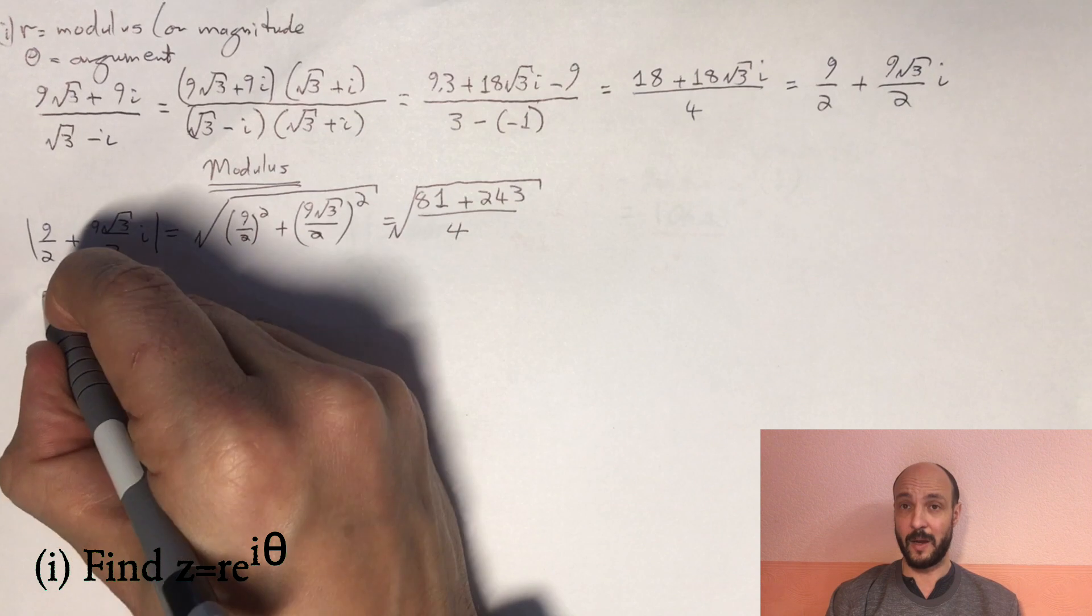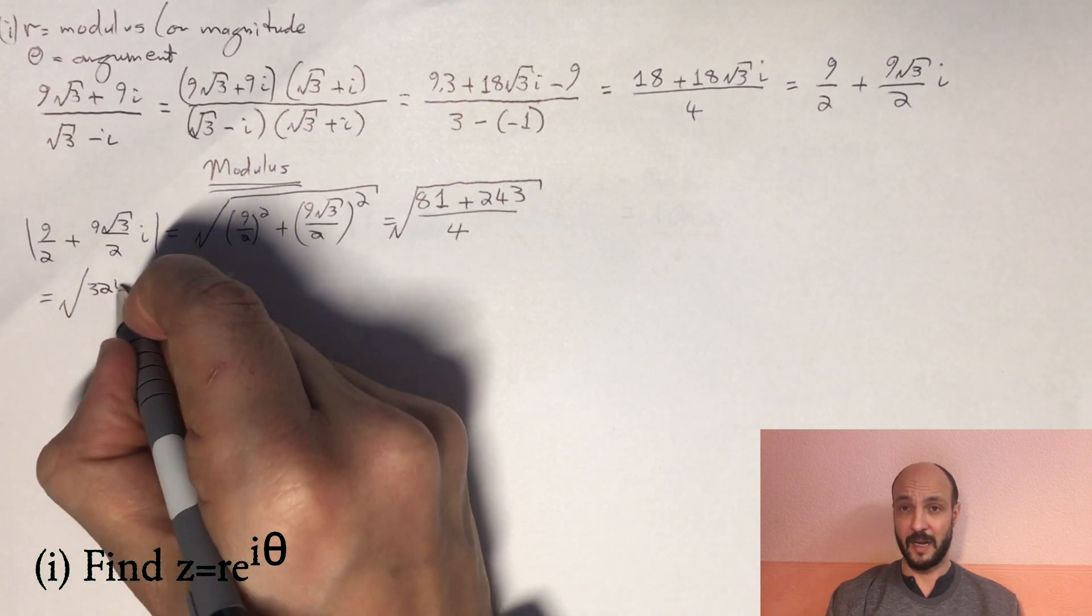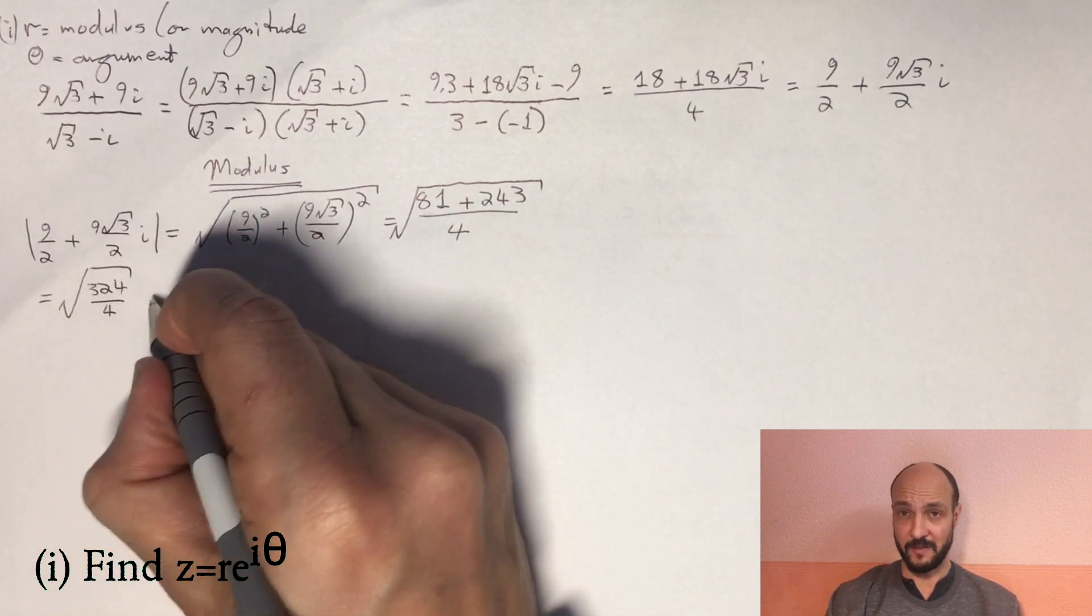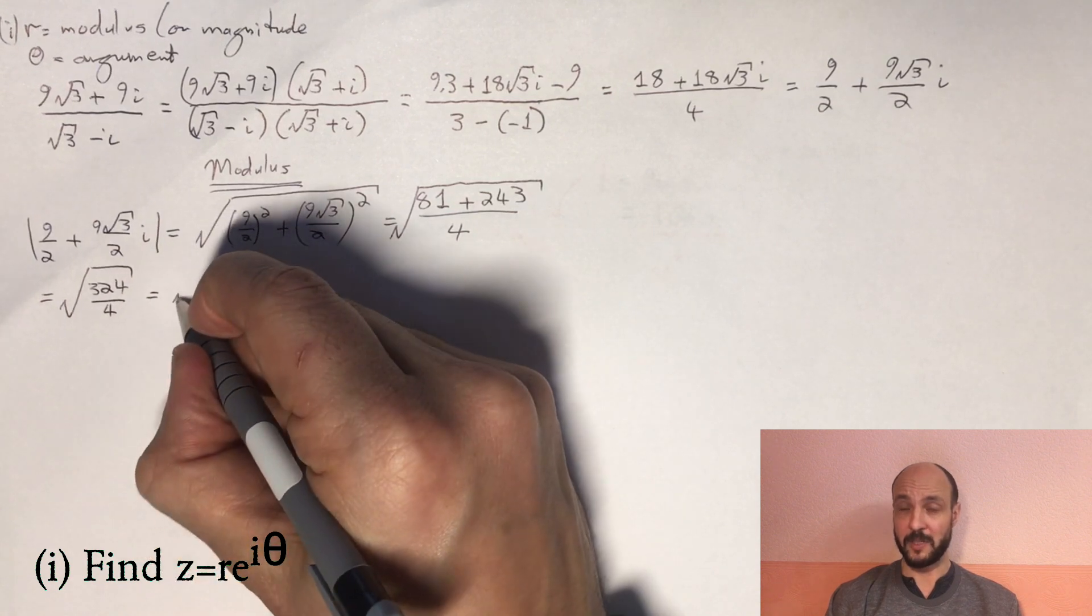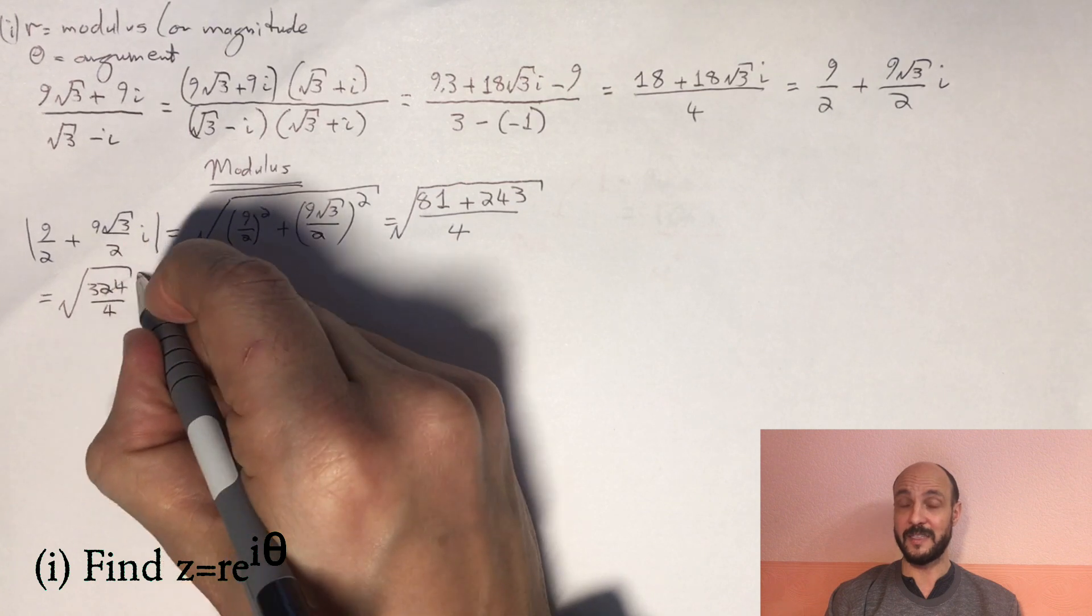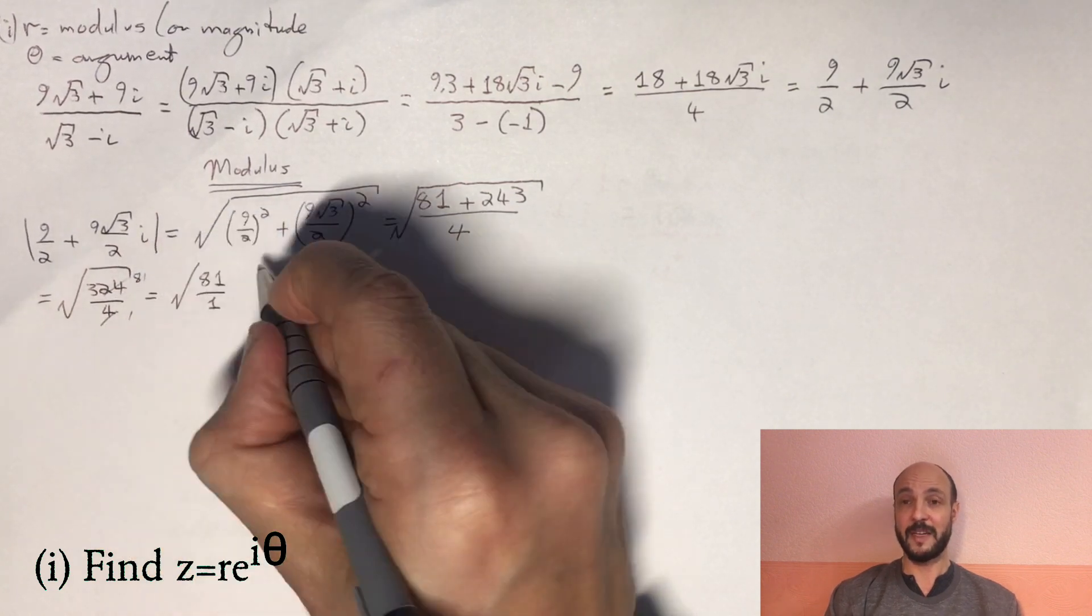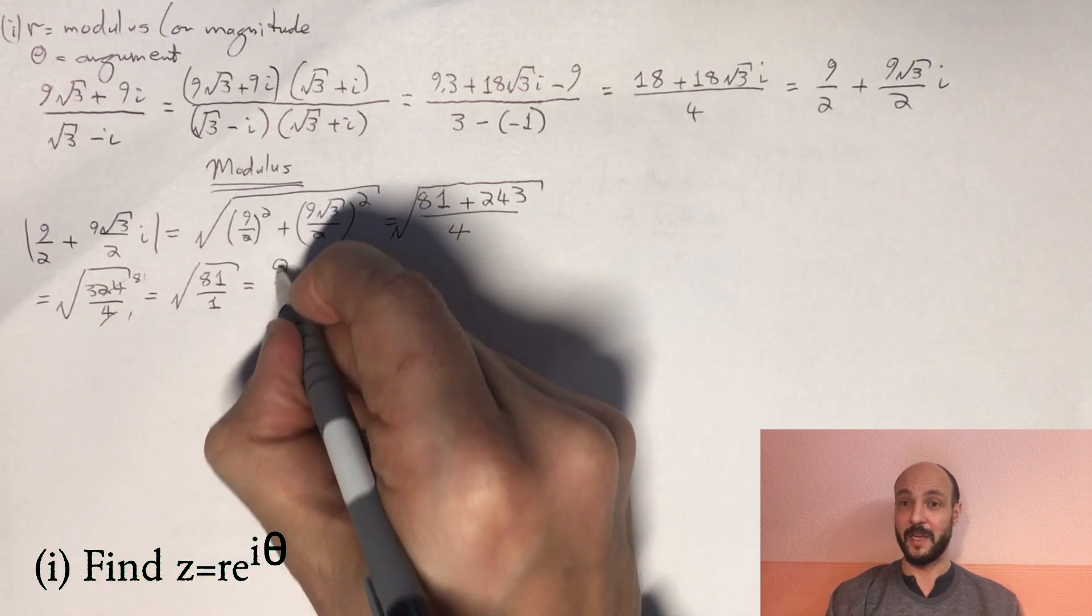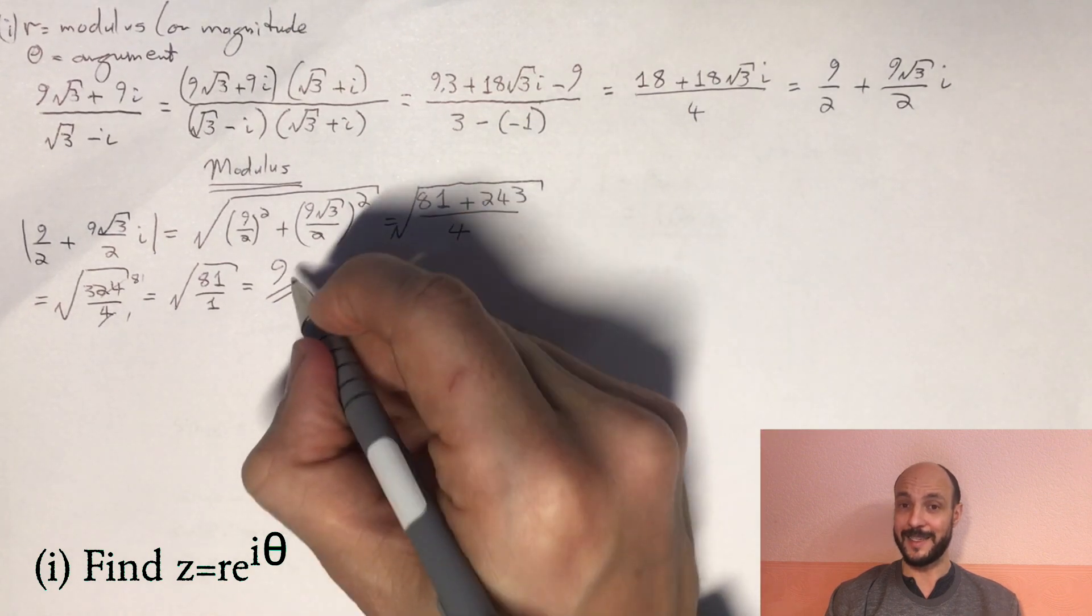Now if we cancel our common factors, we can divide by 2 the top and bottom, and we can divide by 2 again, leaving us with the square root of 81/1, or the square root of 81, equals 9. So our modulus, our value for r is 9.